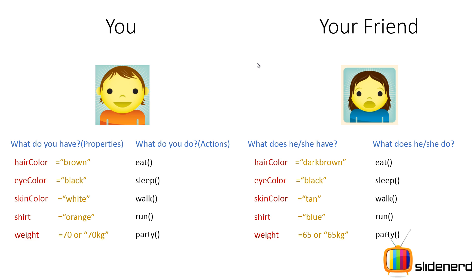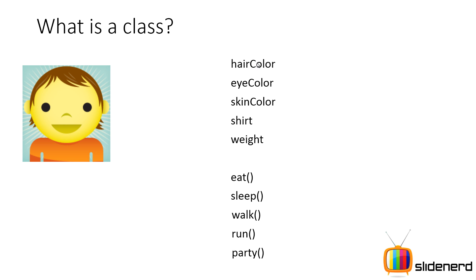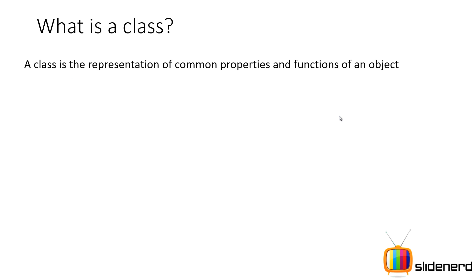So what is a class? Very simple. A class is nothing but the common property names and the common action names that you see here — hair color, eye color, skin color, shirt, weight, and the actions eat, sleep, walk, run, party. This is what is actually a class. It is nothing but the property names of different objects. A class is the representation of the common properties and the functions of an object.